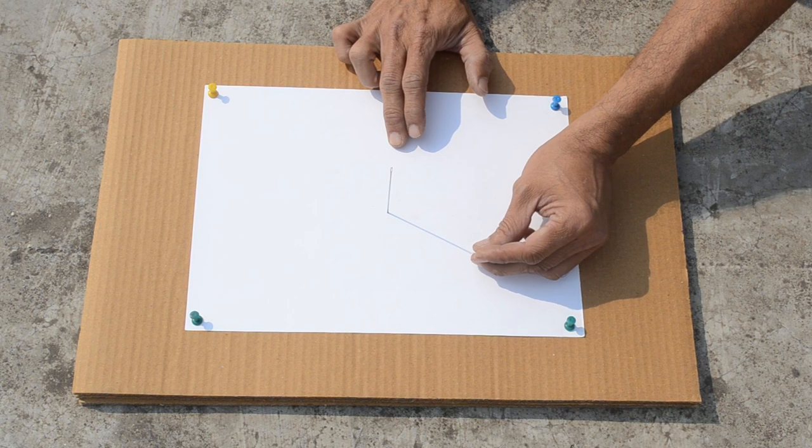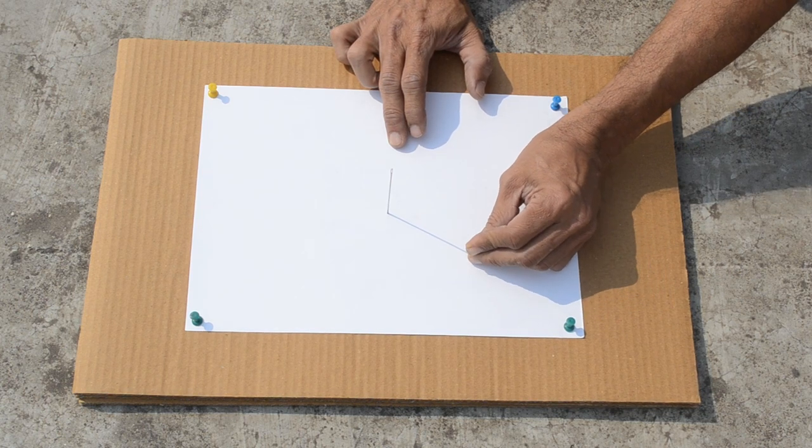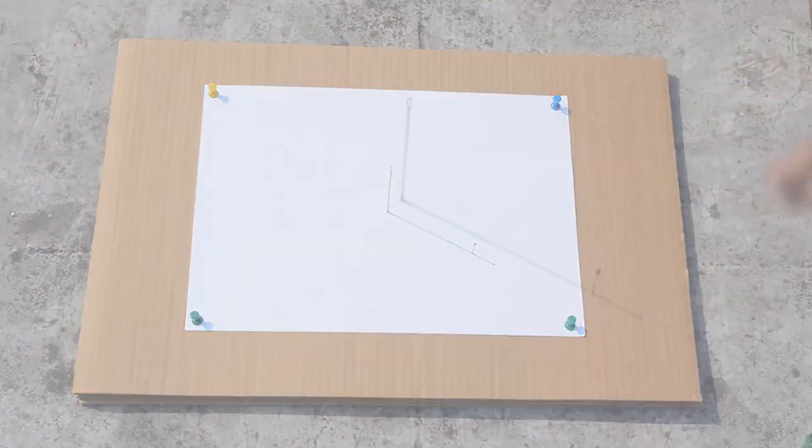We will place a pin here at the tip of the shadow. This can be repeated twice with a gap of 30 minutes.